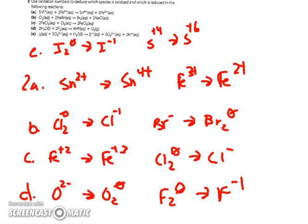In question number two, you were asked to decide which species is oxidized and which is reduced. You have to find out which elements had a change in oxidation number from left to right. In A, there was only tin and iron, so they both had a change. Tin's oxidation number went up, meaning it's losing electrons and being oxidized, while iron has a decrease in oxidation number, so it's being reduced.